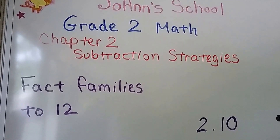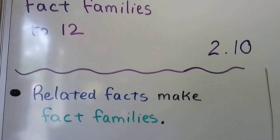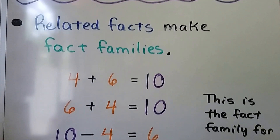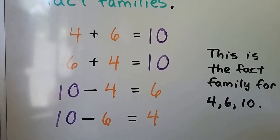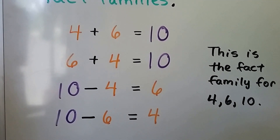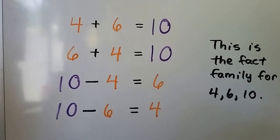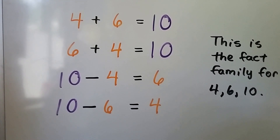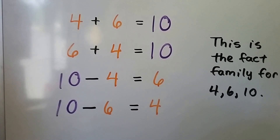Fact families to 12. Related facts make fact families. This is the fact family for 4, 6, and 10. 4 plus 6 equals 10, 6 plus 4 equals 10, 10 minus 4 equals 6, and 10 minus 6 equals 4. They're all related, and they make a family.